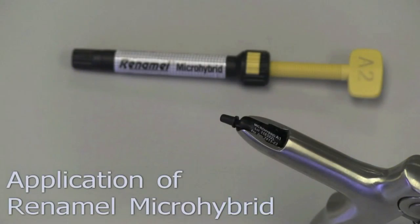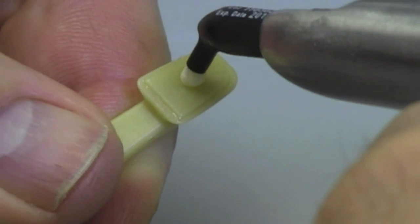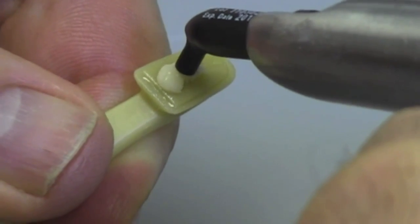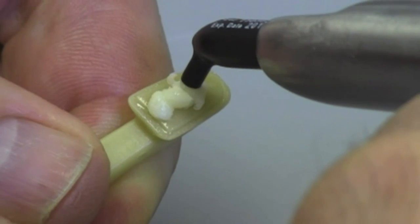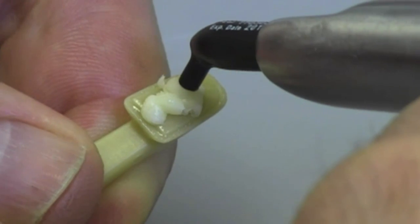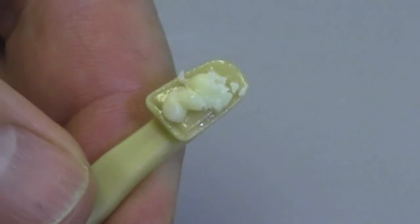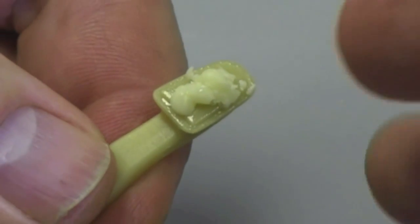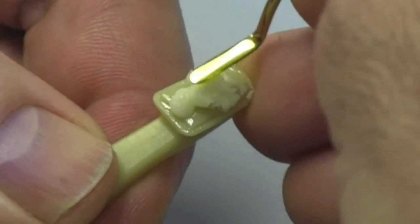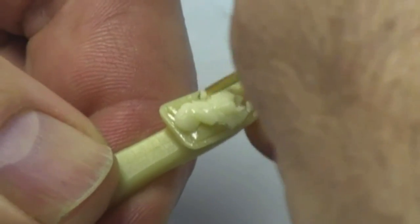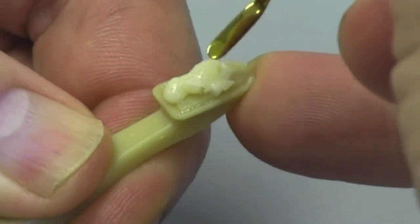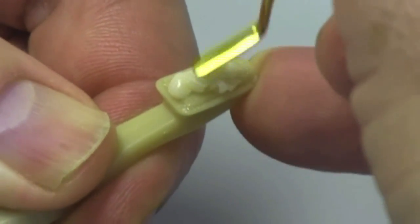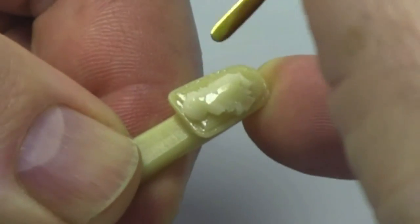One of my favorite composites to use is Cosmodent's Renamel Microhybrid. When this material is dispensed from the Compuel, one of the things that you'll almost always notice is that it appears to be very chalky. This is just the very initial appearance because as soon as you begin to manipulate the material, it begins to have a viscosity that actually will allow it to flow just enough to be extremely adaptable to the underlying tooth surface.